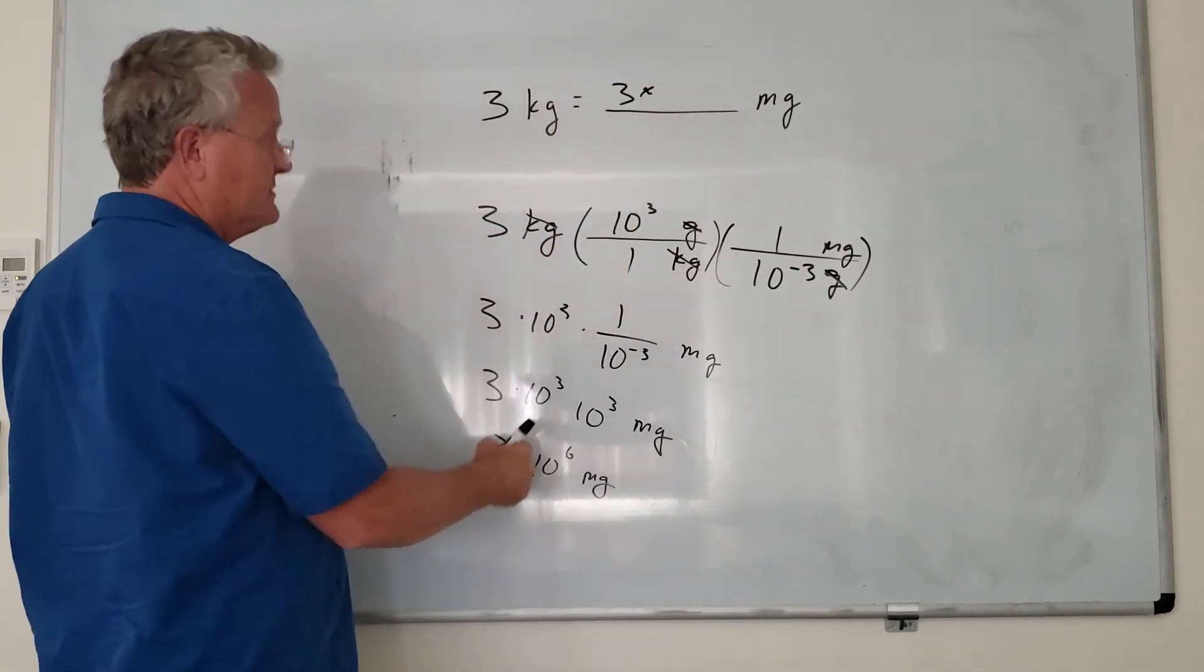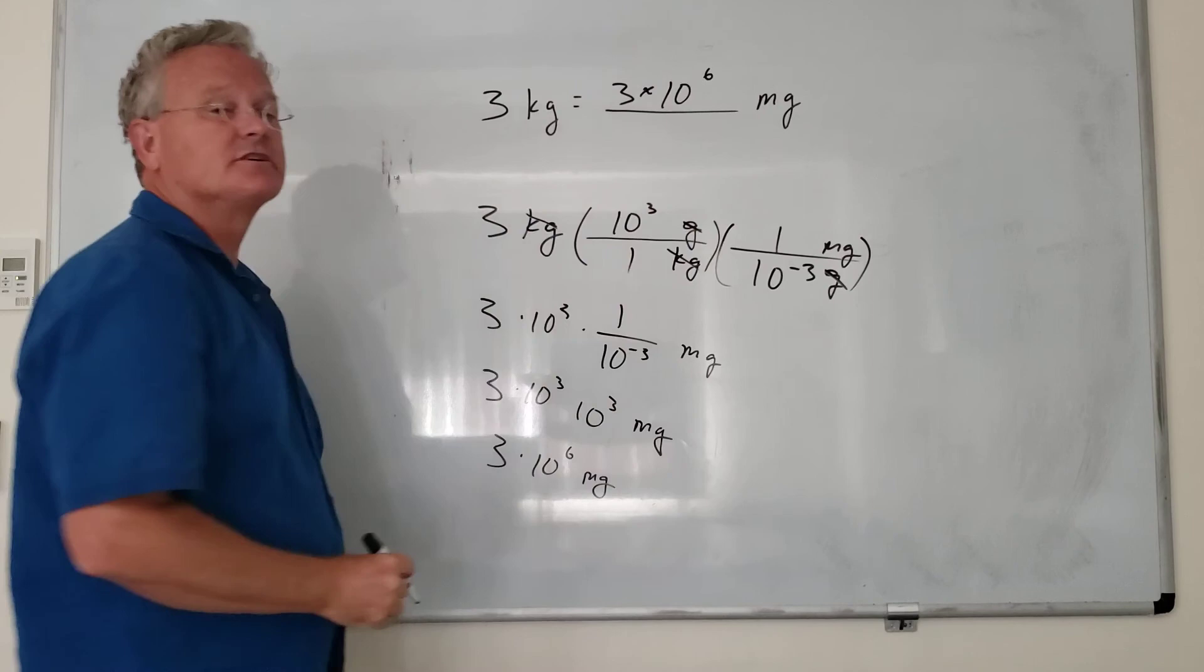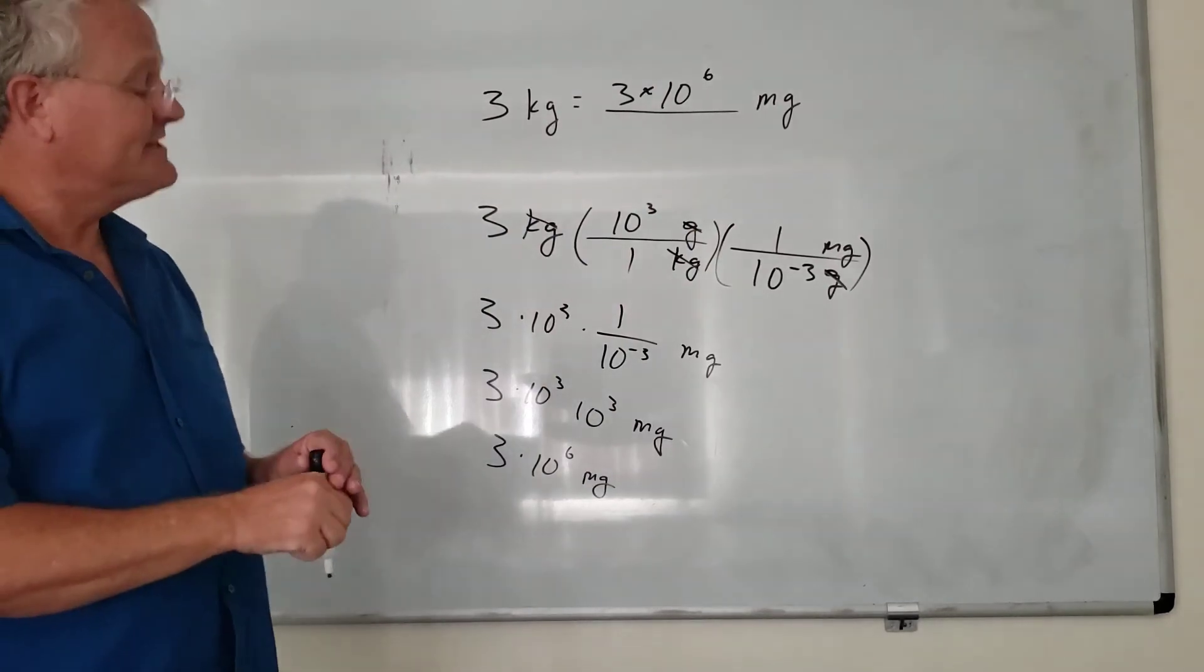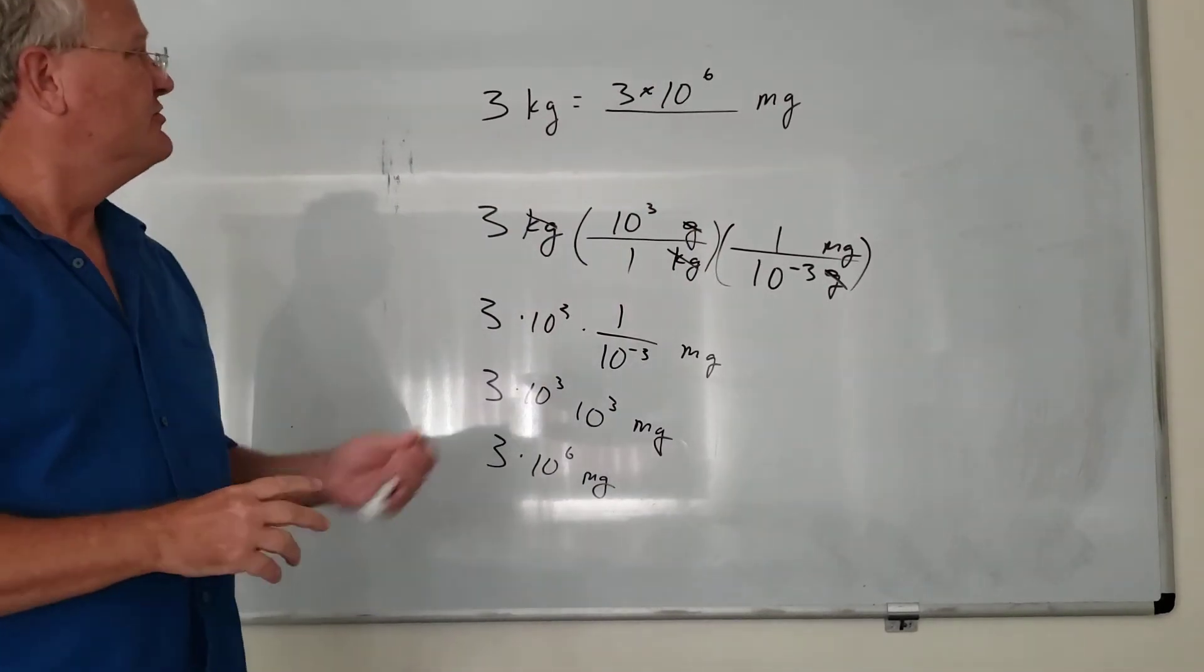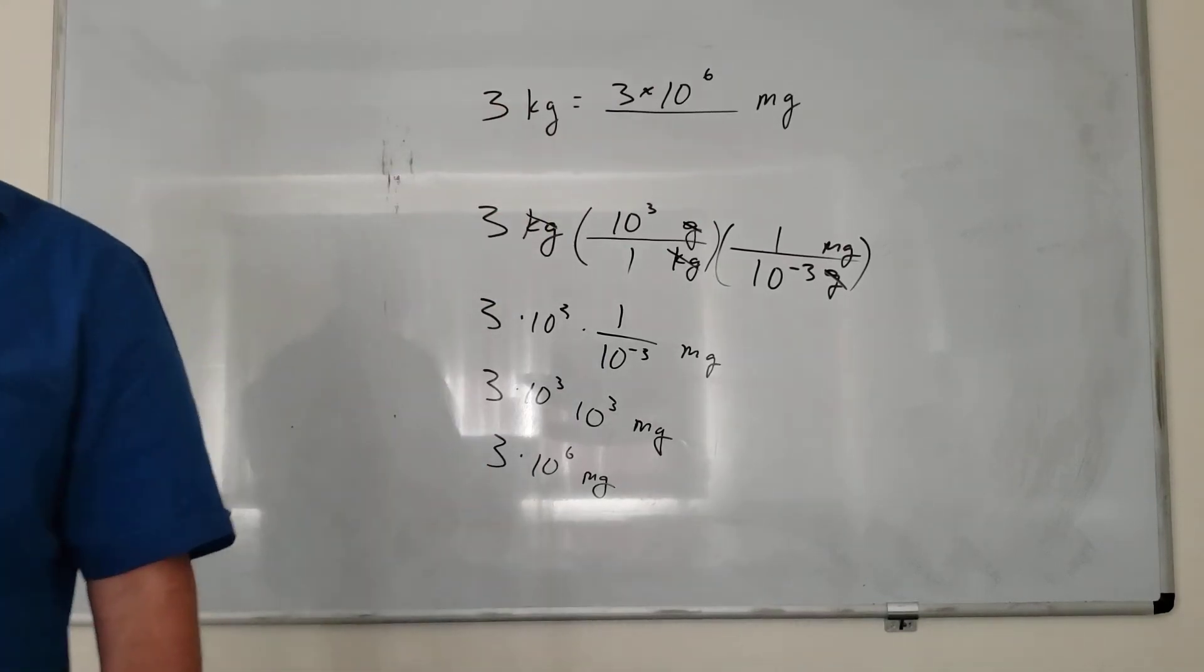So 3 kilograms is 3 times 10 to the 6 milligrams. I'm going to use this notation instead of a dot. So that's the idea of doing the converting within the metric system.